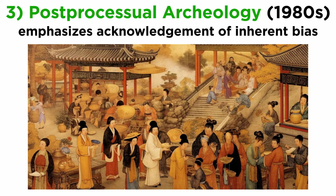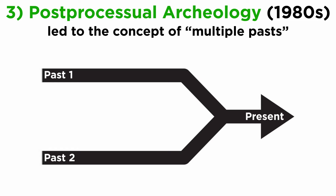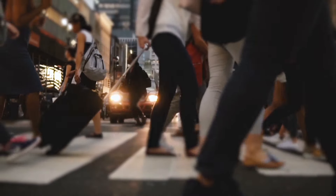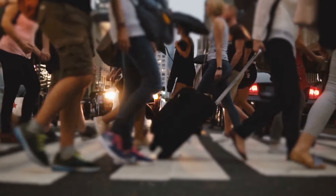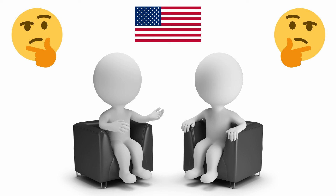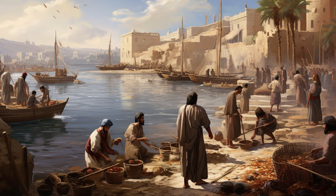Post-processualists argued that in the study of past humans, we will always impart some of our biases, and it's important to acknowledge that. This has led some archaeologists to accept multiple pasts — there is no exact way things happened in history. Think of our modern world and ask two people in different political parties what they think American culture is and the important events that led to its formation. You will likely hear two very different answers that lead to very different interpretations of American culture.